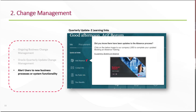OGL can be used to alert users to new business processes or new system functionality via prominent links to updated process guides or e-learning content. This can be communicated from within the system itself, so there's no need to send separate communications to potentially overloaded email boxes.